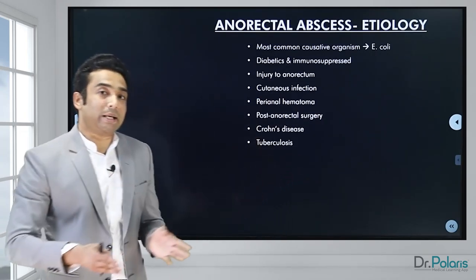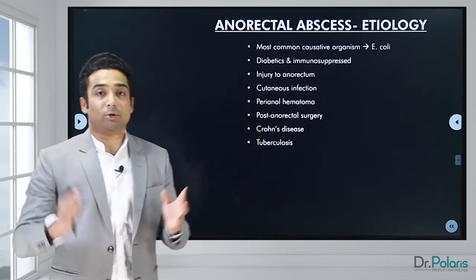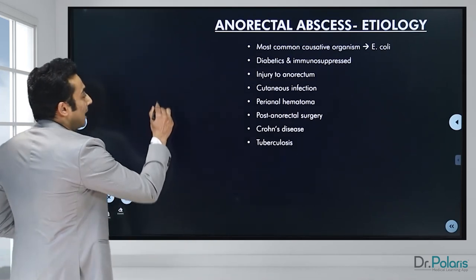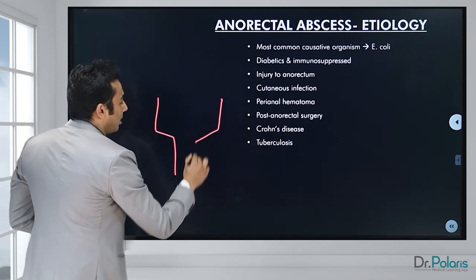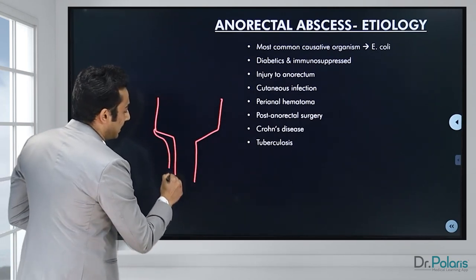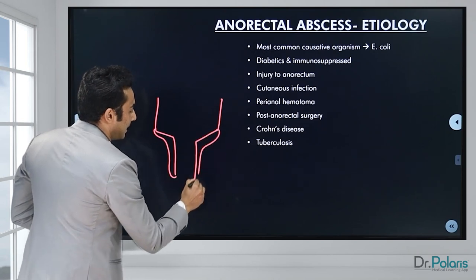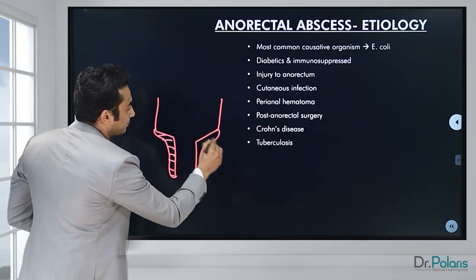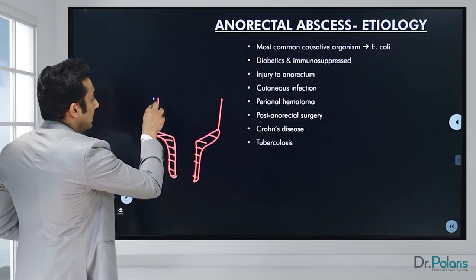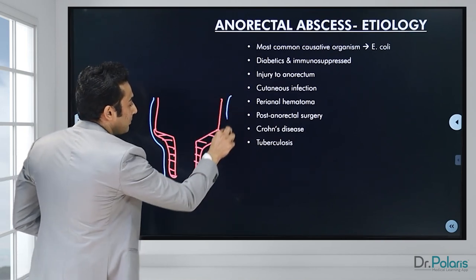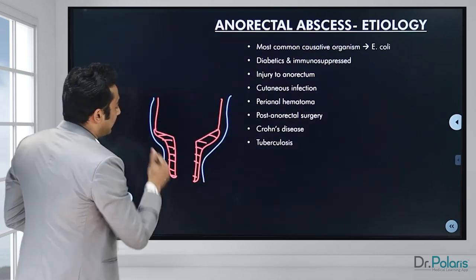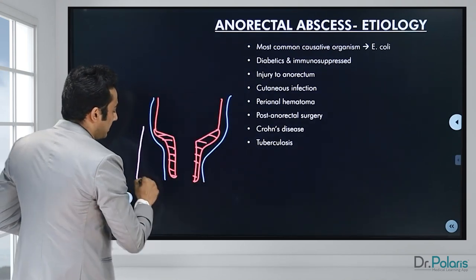Whenever we talk about fistula in Ano, the first thing that comes to our mind is anorectal abscess because the two are closely related. If we remember during the discussion of the anatomy of the anal canal — the anal canal, the internal sphincter, the conjoined longitudinal muscle on either side, and then the external sphincter.